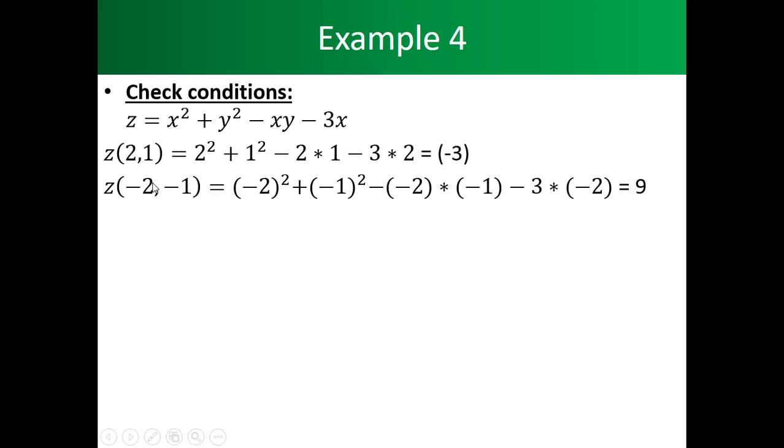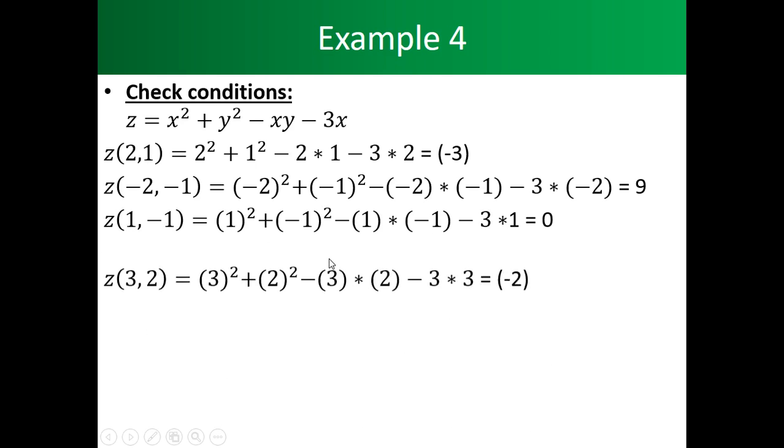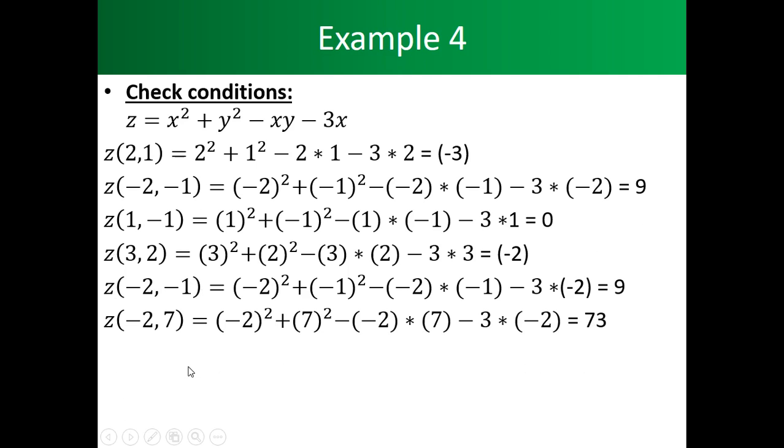We also look at the point z at minus 2, minus 1. That comes up with 9. We see that we have z at (1, minus 1), we get 0. We use also z at (3, 2), we see that's minus 2. We see z at minus 2, minus 1 also gives us 9. So we have two 9s. But as you can see, that's for the same point.